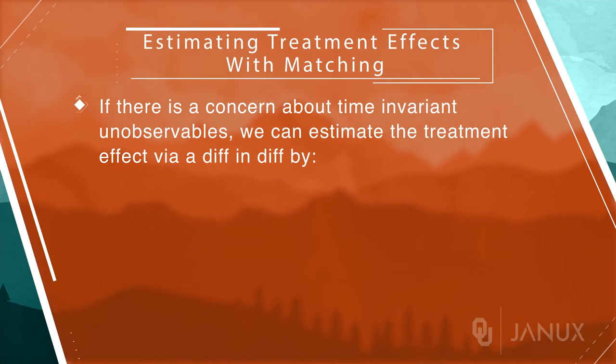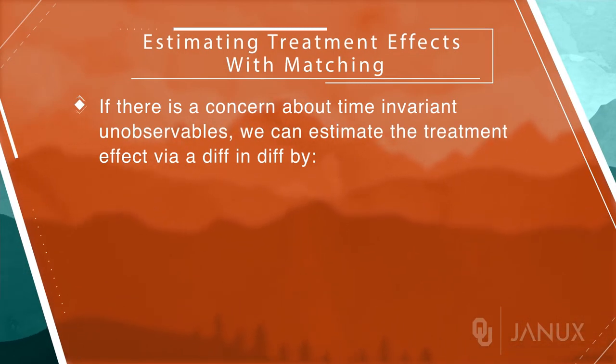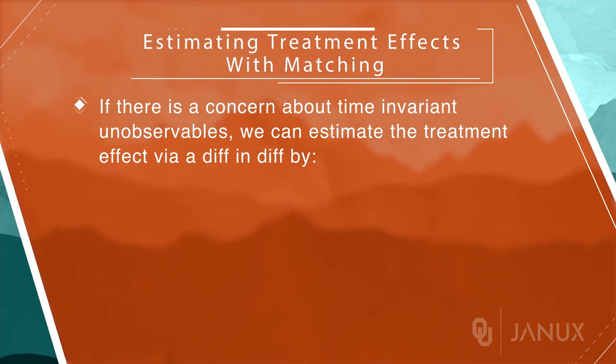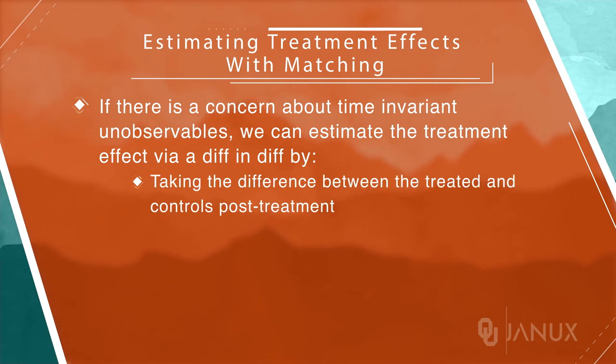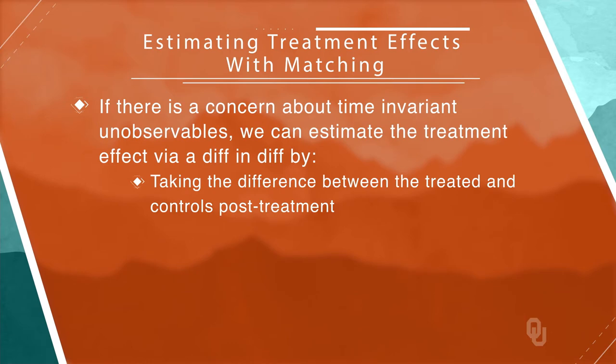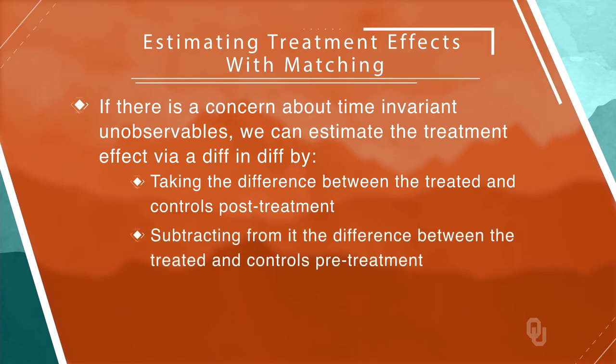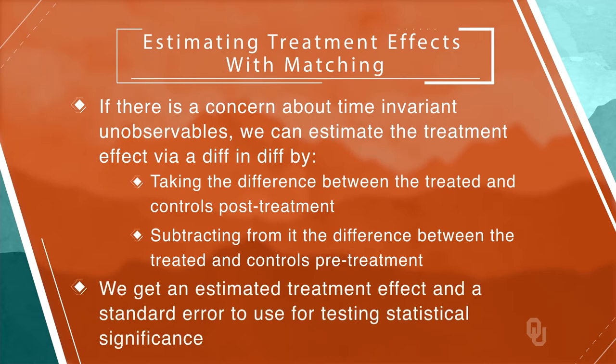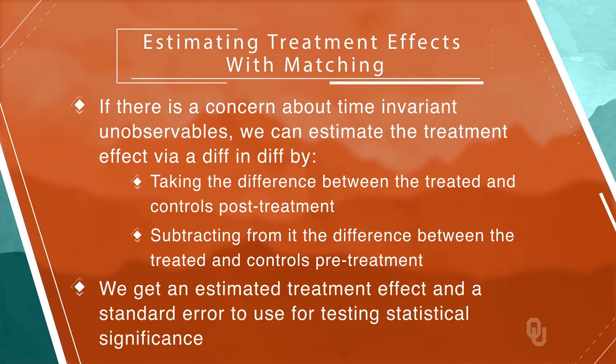The simplest way to construct the estimate of the treatment effect being studied is to compare the average outcome between the treated group and the matched control group using a difference in means test. If there is a concern about time-invariant unobservables and the data is available, we could estimate the treatment effect via a diff-and-diff by taking the difference between the treated and controls post-treatment and subtracting from it the difference between the treated and the controls pre-treatment. In both cases, we get an estimated treatment effect and a standard error to use for testing statistical significance.